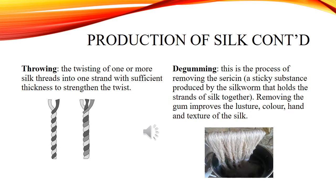The twisting of one or more silk threads into one strand gives sufficient thickness to strengthen the twist. De-gumming: This is the process of removing the sericin, a sticky substance produced by the silkworm that holds the strands of silk together. Removing the gum improves the lustre, color, hand, and texture of the silk.